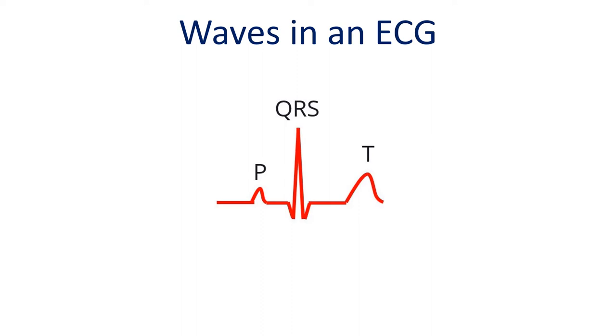The important waves seen in ECG are P, QRS complex, and T wave. The pattern of the waves changes between the ECG leads.